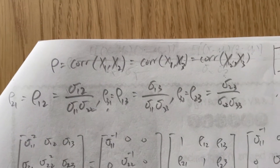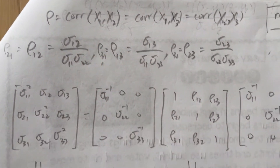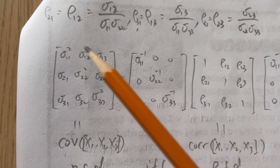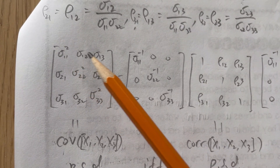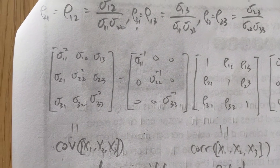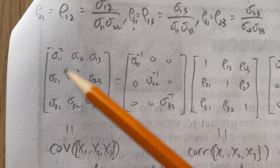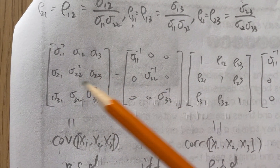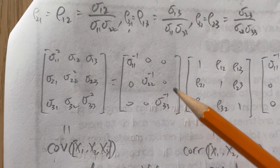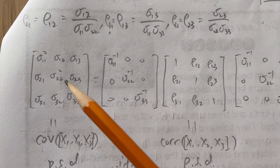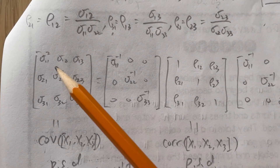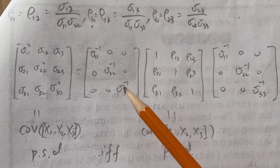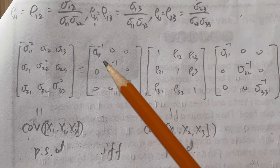How do we go from a correlation to a covariance matrix? Here's how. The covariance matrix has variances on the diagonal and covariances of each pair of random variables off-diagonal — it's symmetric. The covariance matrix can be written as a correlation matrix times two diagonal matrices, where the diagonal matrices contain the standard deviations of each random variable.